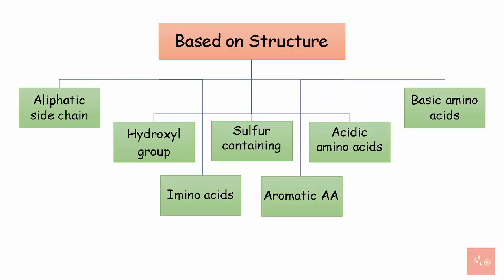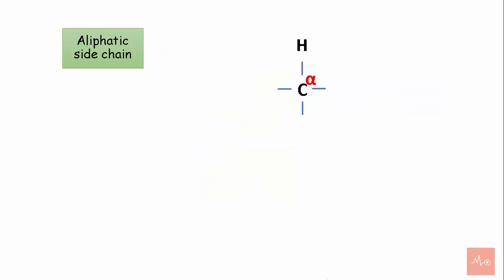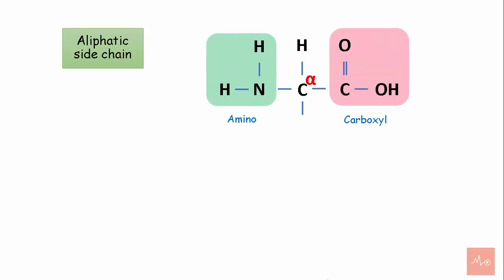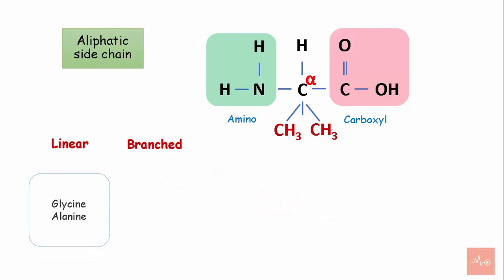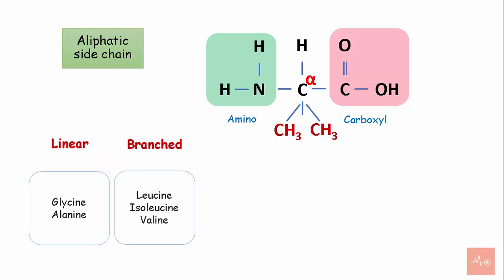Aliphatic side chain amino acids contain a carbon skeleton, one amino group, and one carboxyl group. The side chain can be simple, also called linear, or branched. Examples of linear aliphatic side chain amino acids are glycine and alanine. Examples of branched aliphatic side chain amino acids are isoleucine and valine.